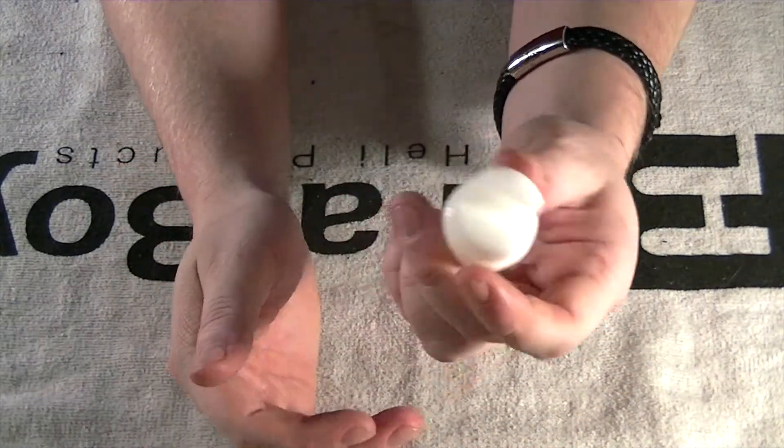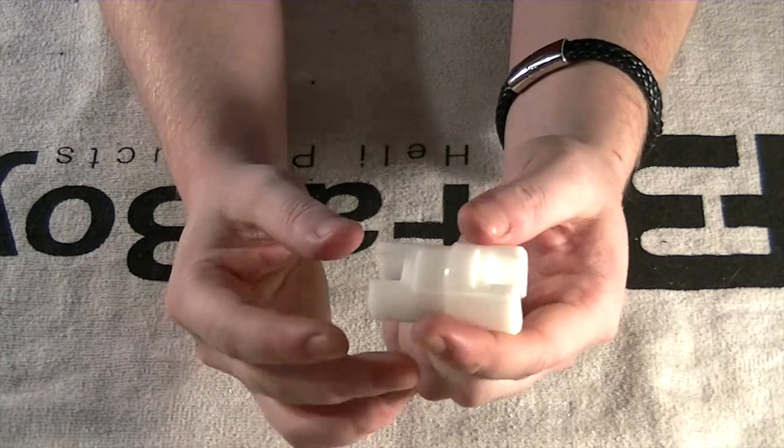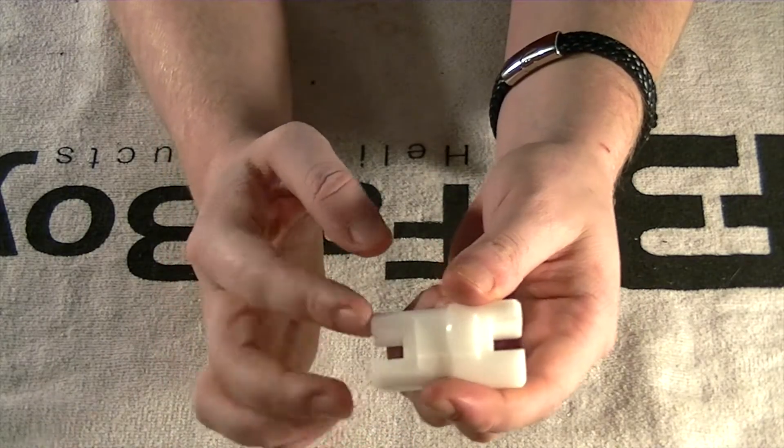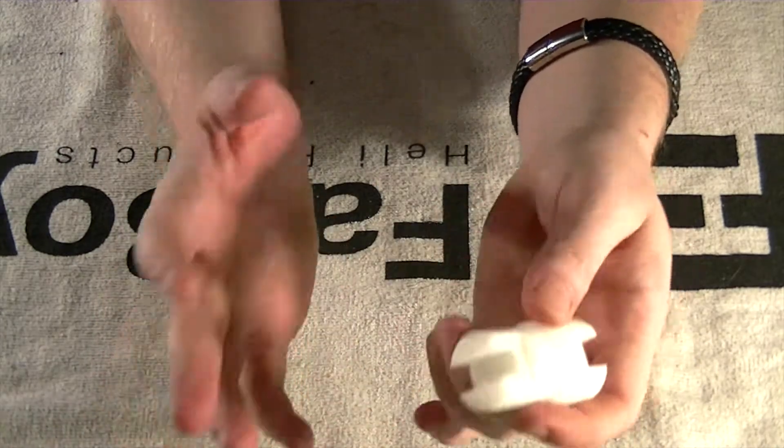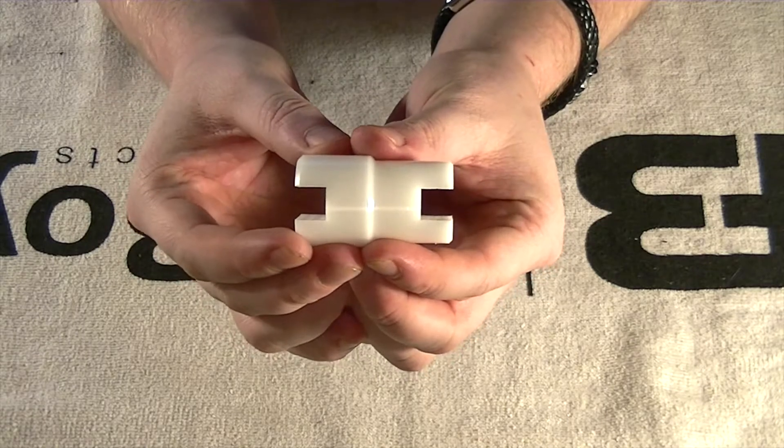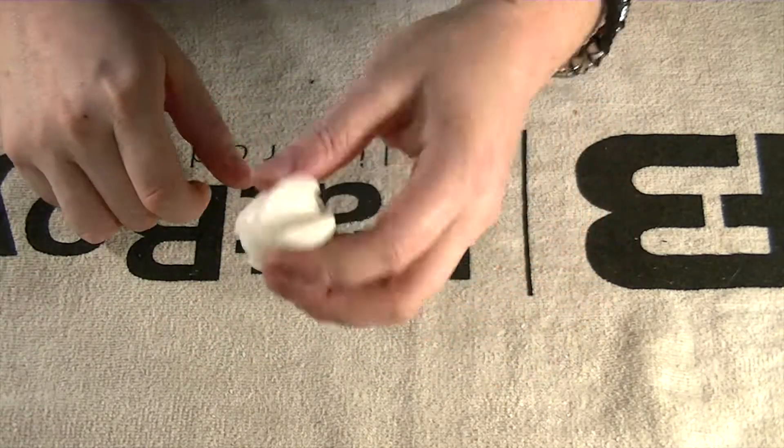They sell two different versions. This one obviously is for the 55 and smaller I believe, and then they sell one that's for like a 91 up to a 105. So pick and choose that. This is to lock the piston in place so that you can tighten down the bolt on top. So get yourself one of those.